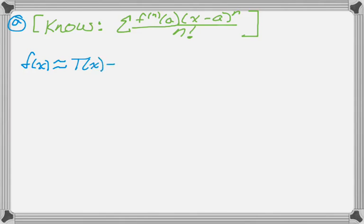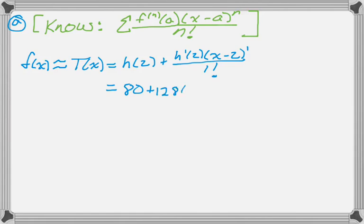So knowing that, f of x, that should actually be h of x in the context of the problem. I'm calling the Taylor polynomial t of x, so it's h of 2 plus h prime of 2 over x minus 2 to the first over 1 factorial. Strictly speaking, you don't need to put the to the first and the 1 factorial, but I do it because it makes the pattern consistent. Just filling in values from the table, we get this, which you can see is a tangent line.